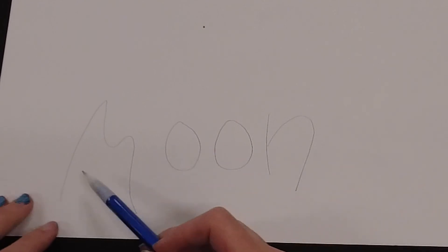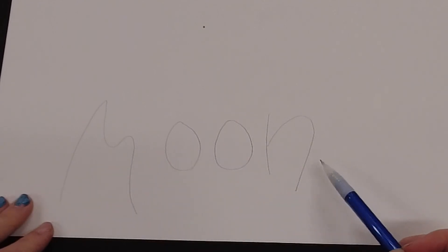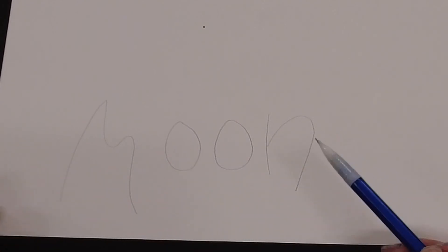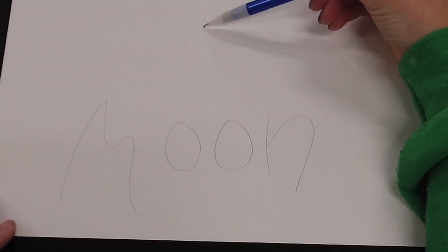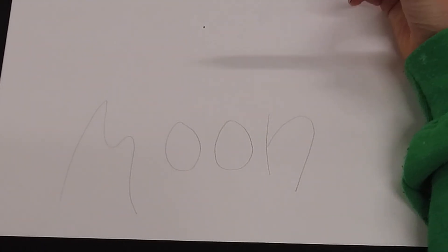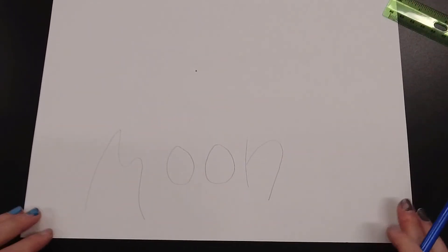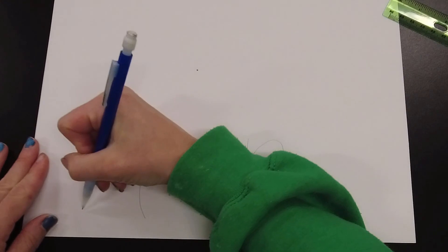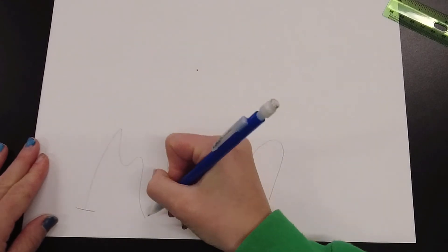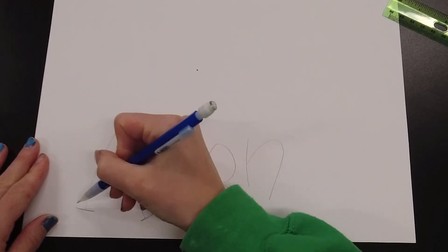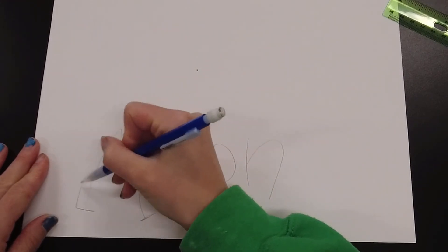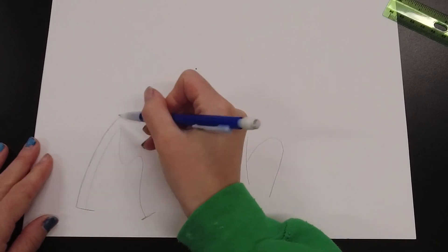The purpose of this video is going to be twofold. I'm going to show you how to turn the word 'moon' into shapes, and then we're going to use a vanishing point that is above our word, so that you can see how it looks when we use the top portion. I'm going to go into my letters and show you how to make those into shapes.